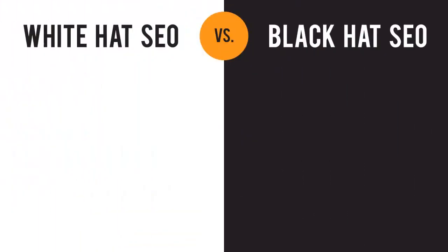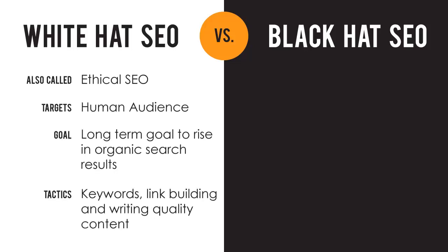Let's look at a quick comparison chart of White Hat SEO vs. Black Hat SEO. White Hat is also called ethical SEO. It targets a human audience, it has long-term goals to rise in organic search results, and it uses tactics such as keywords, link building, and writing quality content.